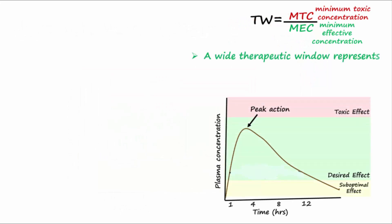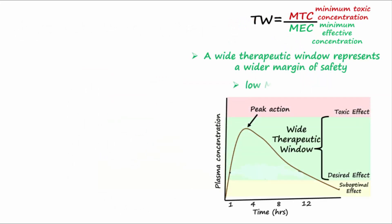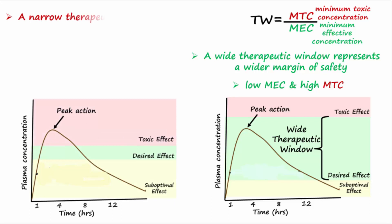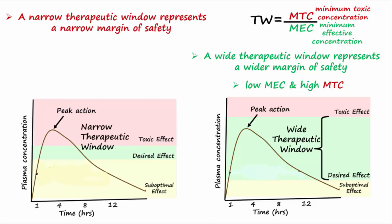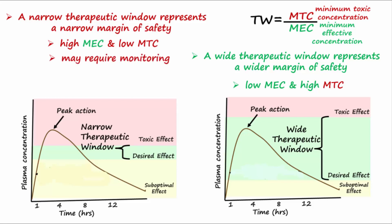Drugs with a wide therapeutic window, or those with a low MEC and a high MTC, are relatively more safe. Drugs with a narrow therapeutic window, or those with a high MEC and a low MTC, are relatively more dangerous and may require regular drug monitoring. Examples include digoxin, lithium, warfarin, and amphotericin.